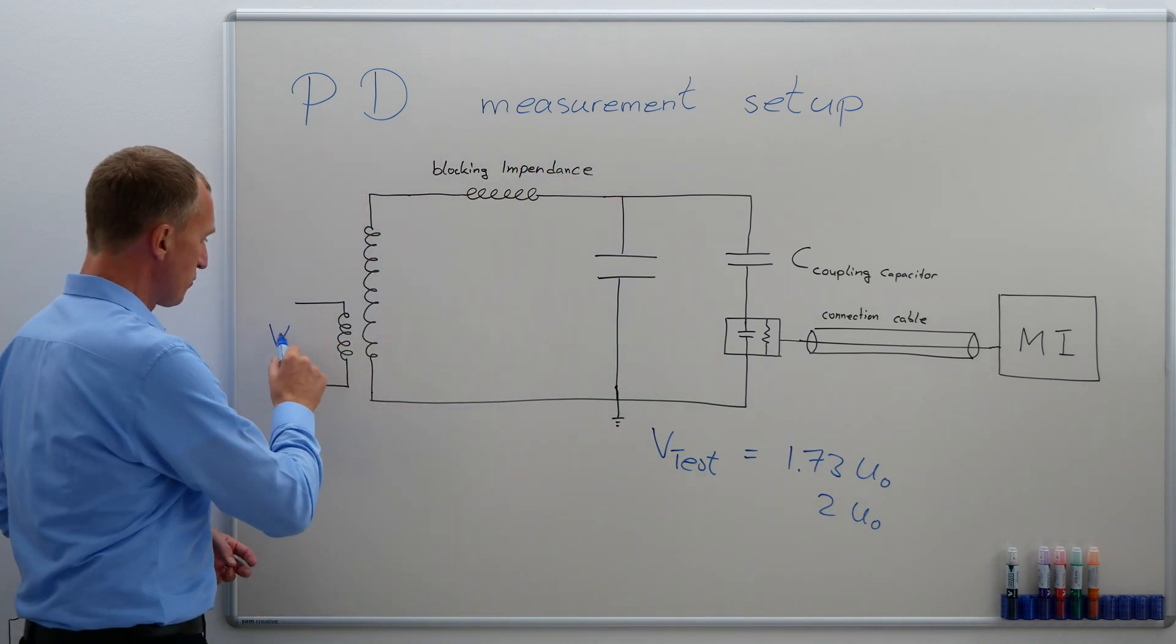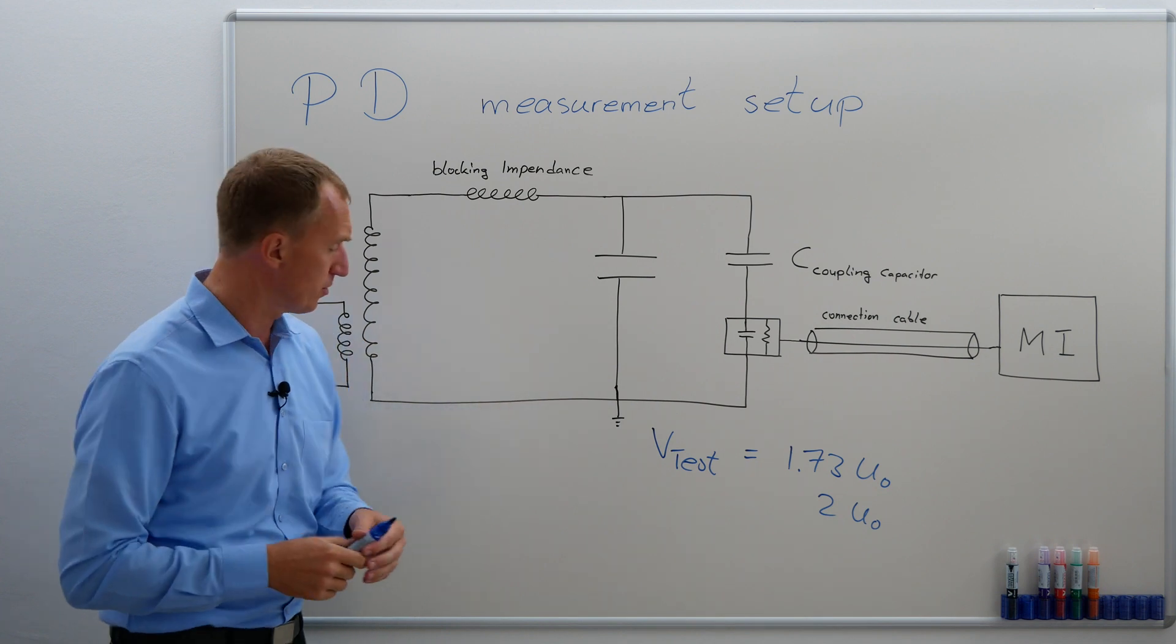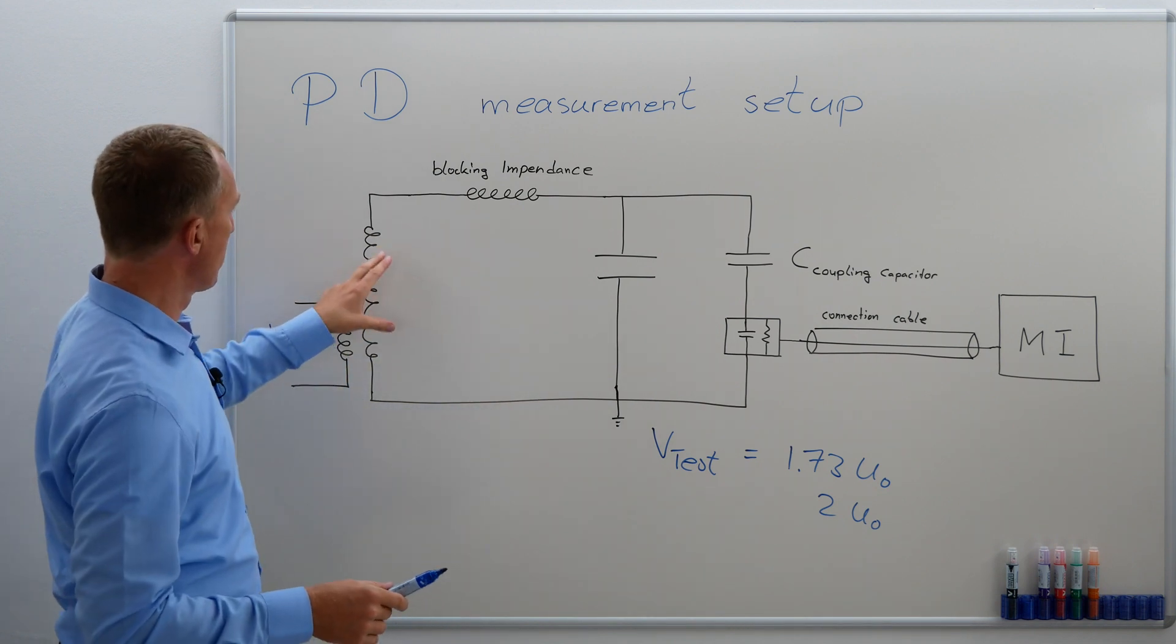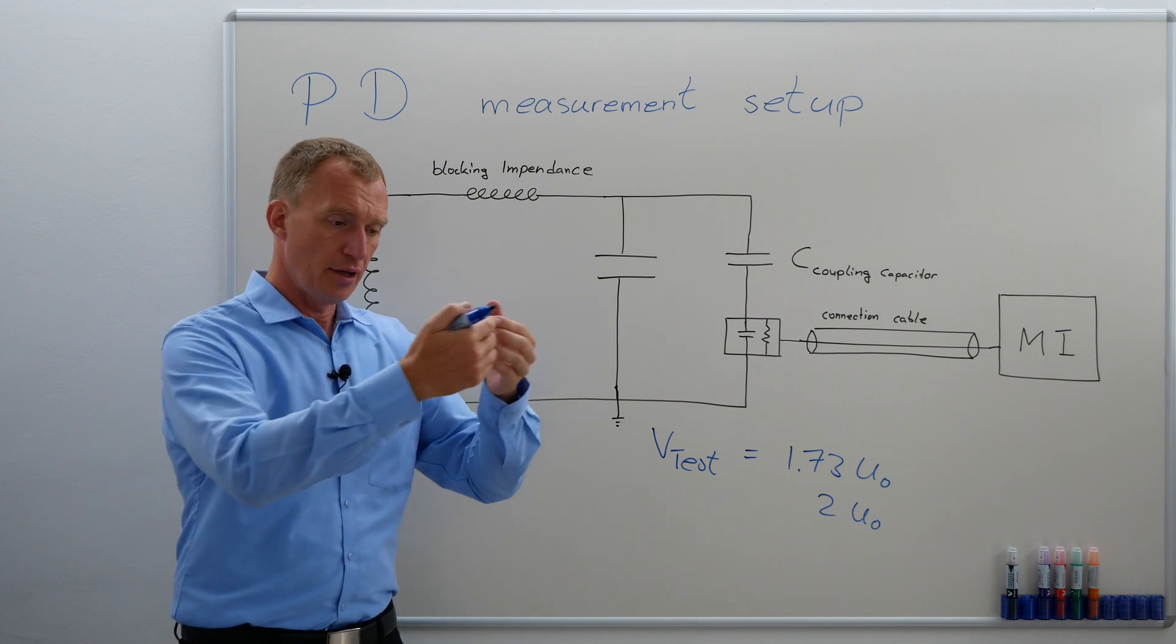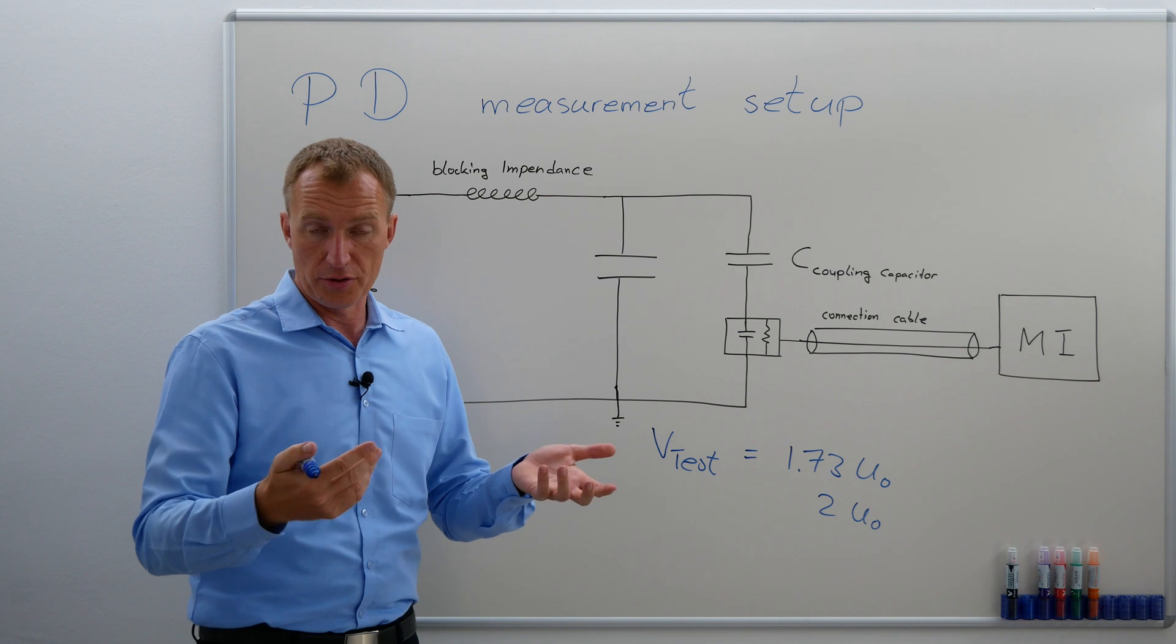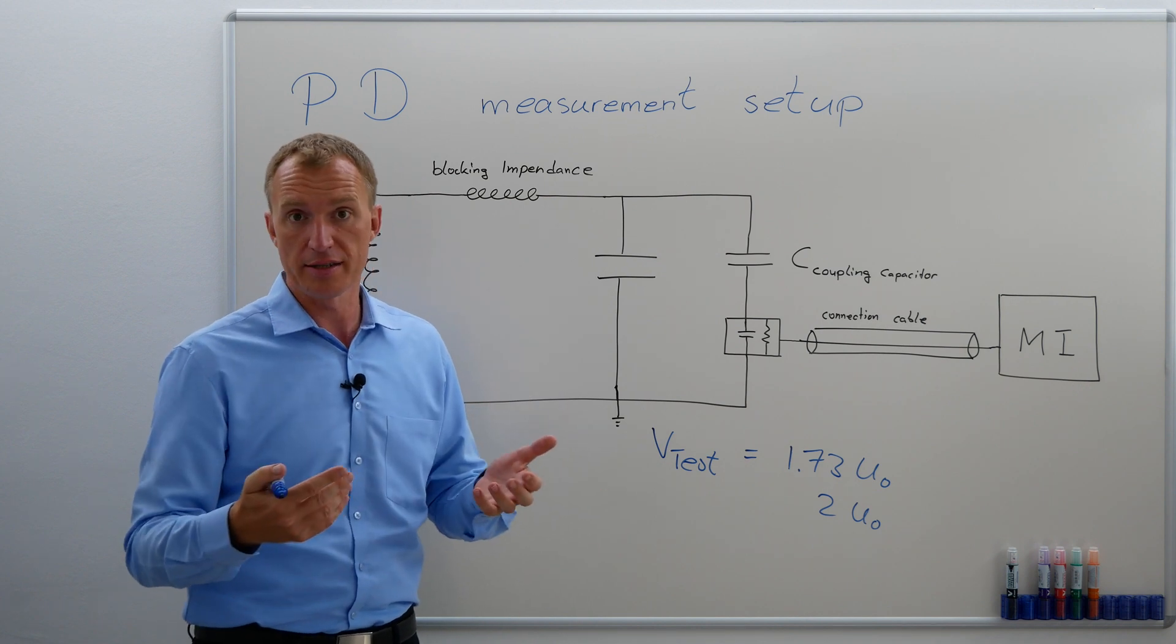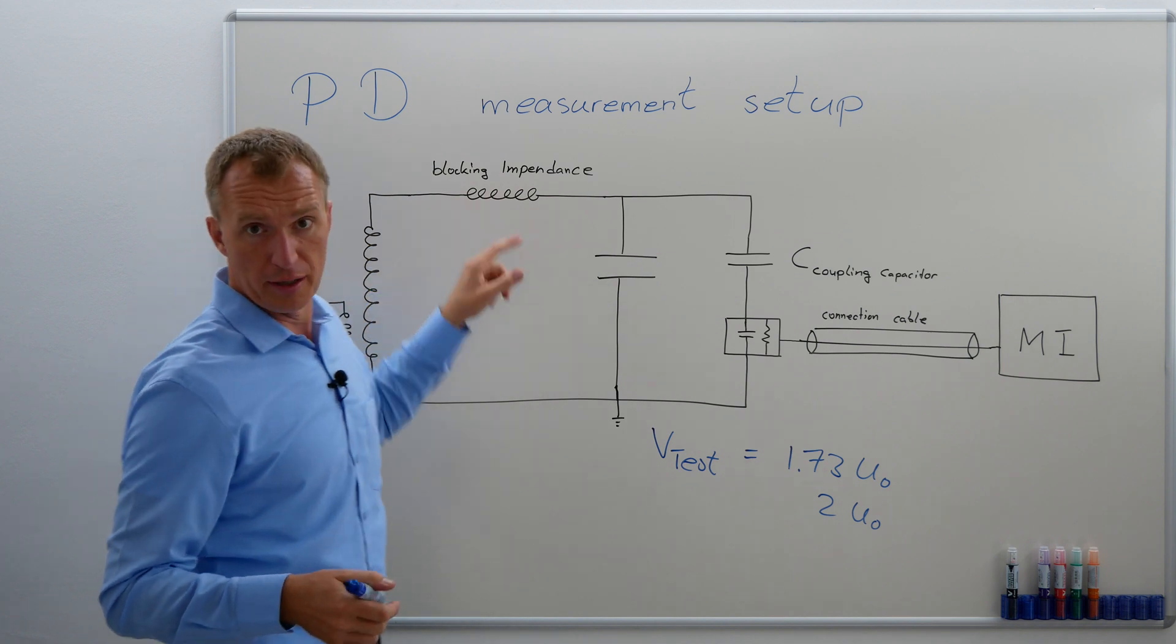Therefore, we need a regulating transformer that we can regulate. The transformer usually gets something between 110 or 400 volts. The transformer itself could transmit noise coming from the energy network, or the transformer itself could have partial discharges. So it's a very clever idea to put a blocking impedance in there.